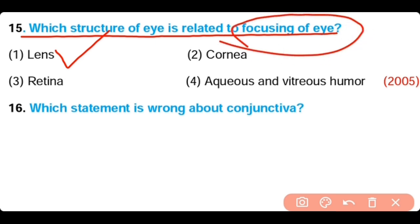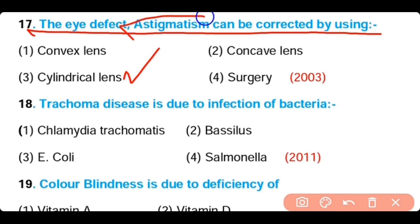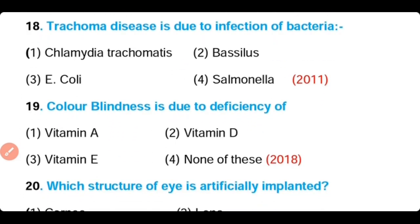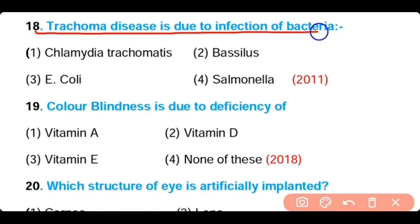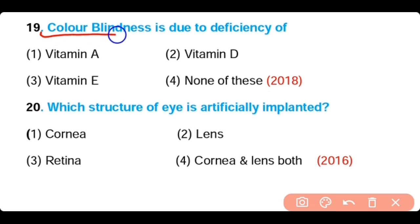Question number seventeen: The eye defect astigmatism can be corrected by using (a) concave-convex lens, (b) concave lens, (c) cylindrical lens, (d) surgery. The answer is option three — astigmatism can be corrected by using a cylindrical lens. Question number eighteen: Trachoma disease is due to infection of which bacteria? (a) Chlamydia trachomatis, (b) Bacillus, (c) E. coli, (d) Salmonella. The answer is option one.